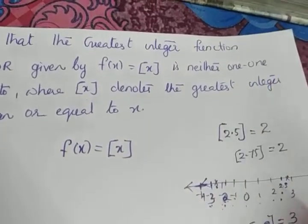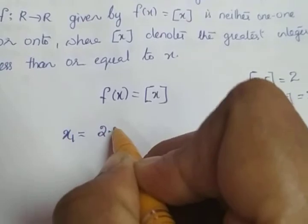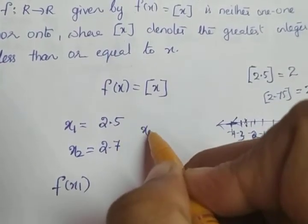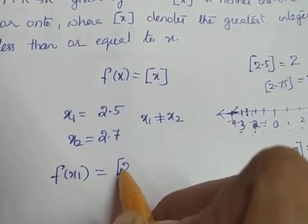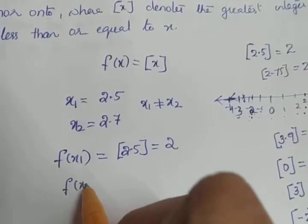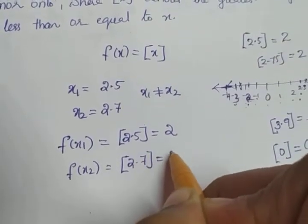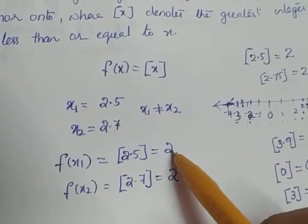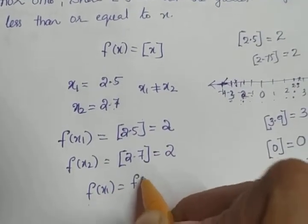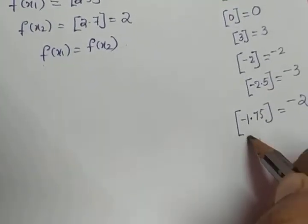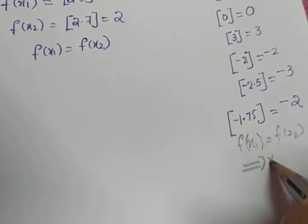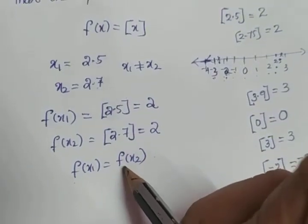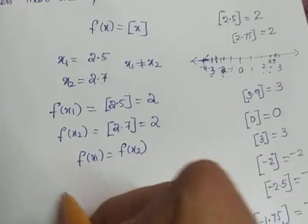The question is to show that f is neither one-one nor onto. Suppose we take x1 = 2.5 and x2 = 2.7. x1 and x2 are entirely different, so x1 ≠ x2. But f(x1) = ⌊2.5⌋ = 2, and f(x2) = ⌊2.7⌋ = 2. That means for two different x values we get the same image 2. So f(x1) = f(x2) even though x1 ≠ x2, which implies f is not one-one.